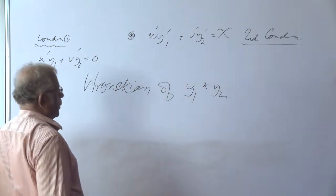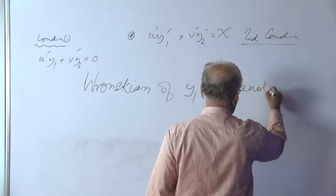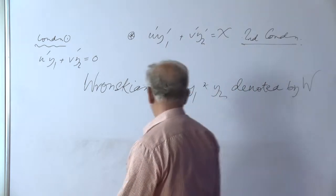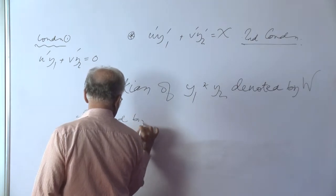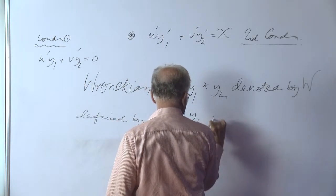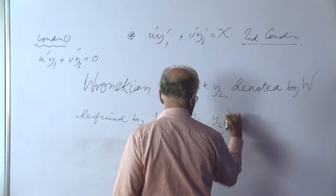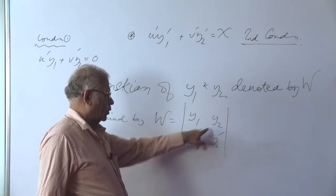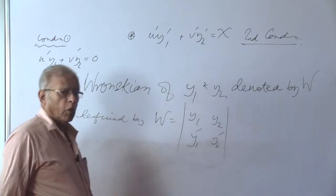The Wronskian of y1 and y2 which is denoted by capital W is defined as determinant y1, y2, y1 dash, y2 dash. That's the determinant. In other words, it is y1 y2 prime minus y2 y1 prime. That's the Wronskian for any two functions y1 and y2.